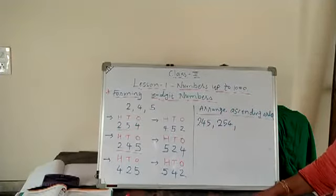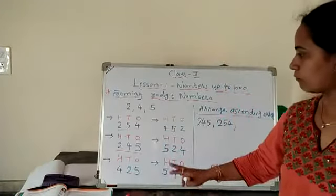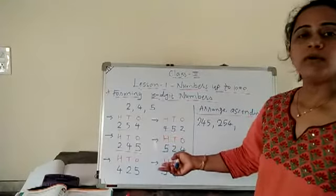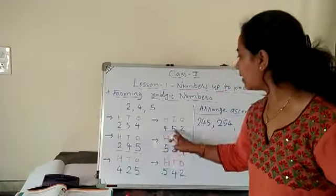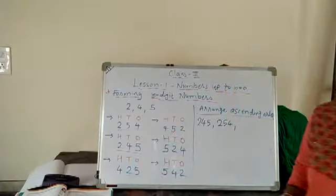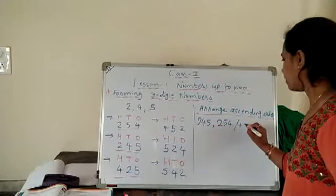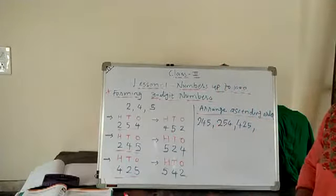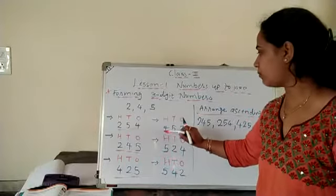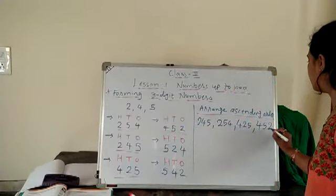Then compare the remaining 4 numbers — which is smallest? 100s place: 4 and 5. So 4 is smaller. Among the numbers with 4 in the 100s place, compare the 10s place: 2 and 5. Which is smallest? 2. So take that number — 425. Then the next is 452. Then compare the last two numbers: both have 5 in the 100s place, so compare 10s place: 2 and 4. Smallest is 2. So 524 comes next.